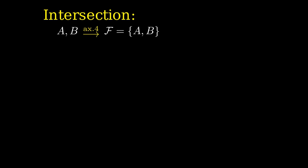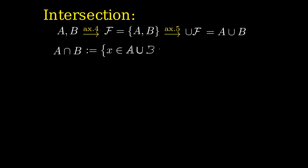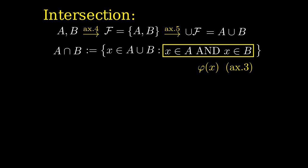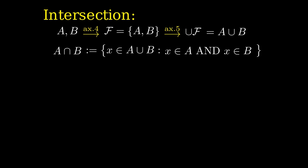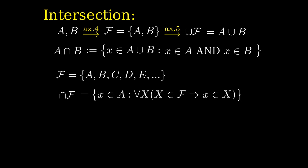You might think we also need an axiom for intersection, but that's not true. Given sets A and B, I can create the pairing {A, B} and its union A ∪ B. Then I can define the intersection of A and B as the set of all elements X that belong to the union of A and B and also satisfy the property that they belong to A and belong to B — a formula phi — so we use axiom 3 to define the intersection. We can generalize this by considering a non-empty set F and defining the intersection over F as the set of all elements X that belong to the first set A in F but also belong to all the other sets in F.